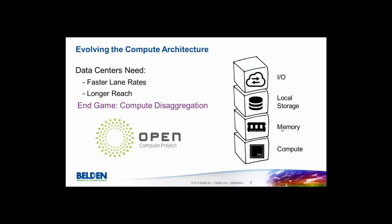If we want to evolve our compute architecture, ideally we want to componentize everything — put it in its own little box. Take compute, memory, local storage, and IO and each put them in a box. This makes it easier to manage and upgrade: to upgrade memory, you open a memory blade and add or swap it out. This is being driven a lot by the Open Compute Project — what they call compute disaggregation. Instead of having everything on one board, we split things up to make it more manageable, and to do this we need faster lane rates and longer reach.